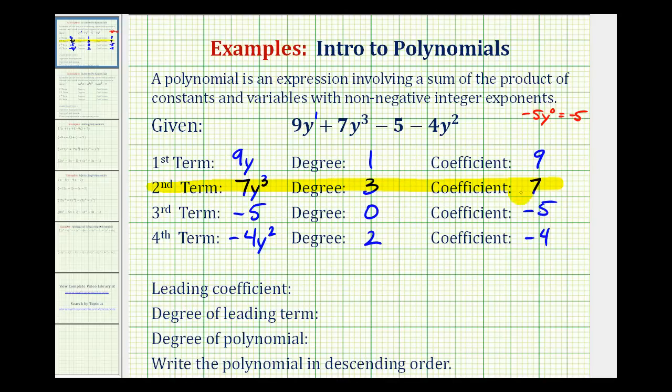So the leading coefficient would be seven. And the degree of the leading term would be three. And the degree of the polynomial is the same as the degree of the leading term. So this is a degree three polynomial.